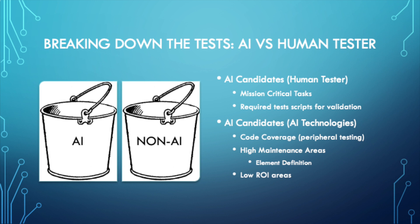On the AI candidate side, we really want to utilize the power and strength of AI technologies to cover that peripheral testing in the background. We have that core testing in the middle that we're writing our mission critical tests for, and then we have that peripheral testing that we may not have time within the sprint to get to. That's where we can offload that heavy workload to AI and boost our code coverage.